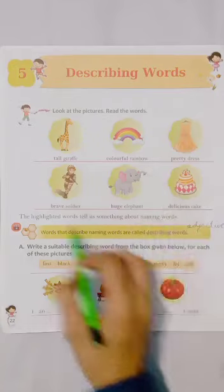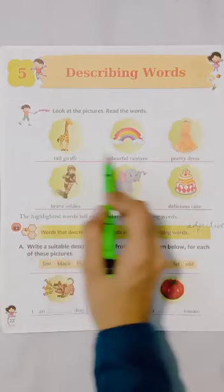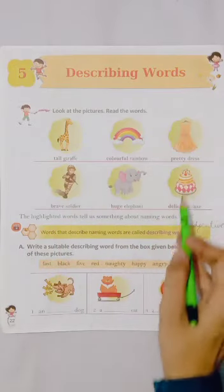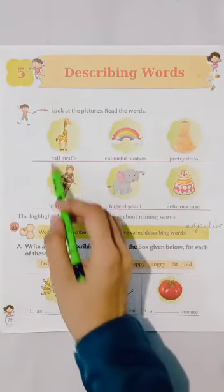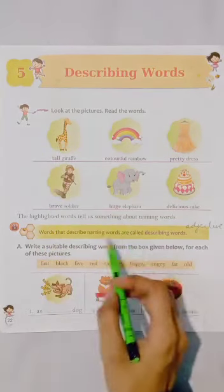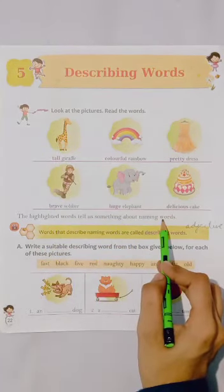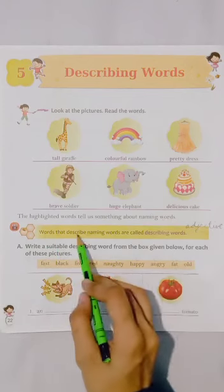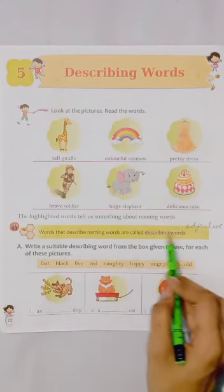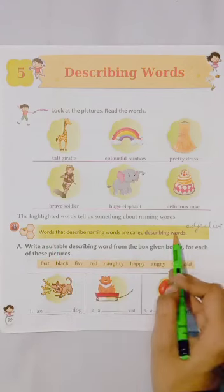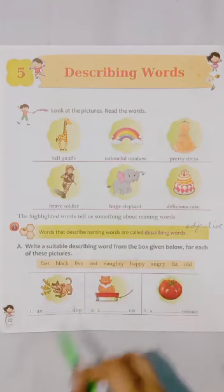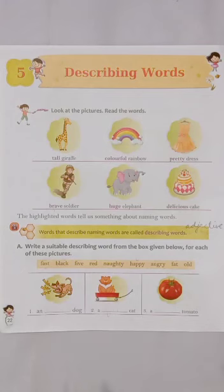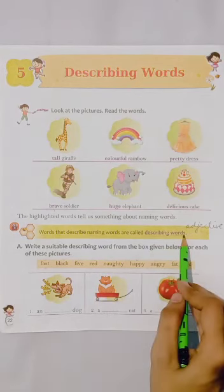Giraffe, rainbow, dress, soldier, elephant, cake — these are naming words. And tall, colorful, pretty, delicious, huge, brave — yeh words hame naming words ke baare meh kuch information de rahe hain. Words that describe naming words are called describing words. Aise words jo naming words ke baare meh kuch information dein, unko describe karein — woh naming words kaise hain — un words ko hum bolte hain describing words.